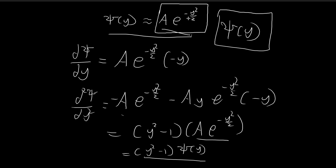That aside, you can see that at this point our xi — we still don't know what it is — but we know that as y tends towards larger numbers, it is going to behave in such a way that it resembles something like e to the power of negative y-squared over 2. This is a very, very important clue.